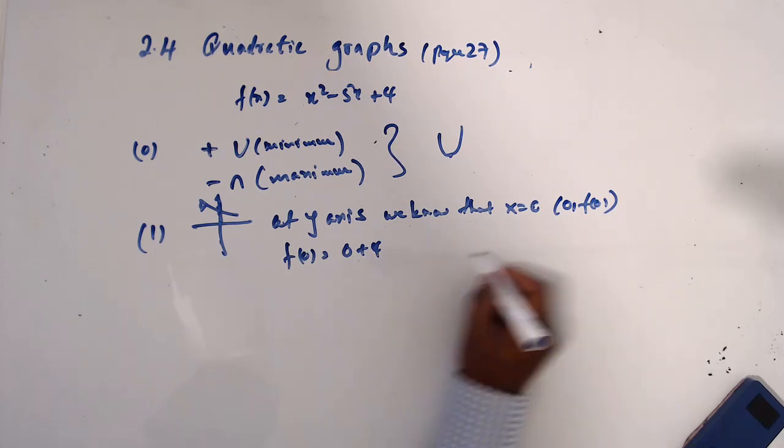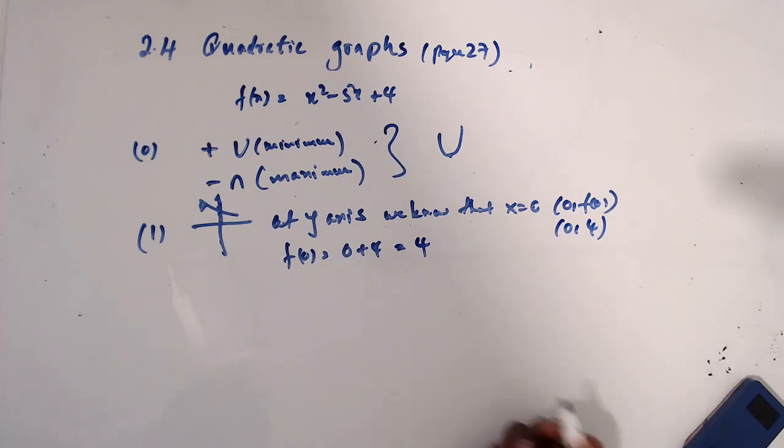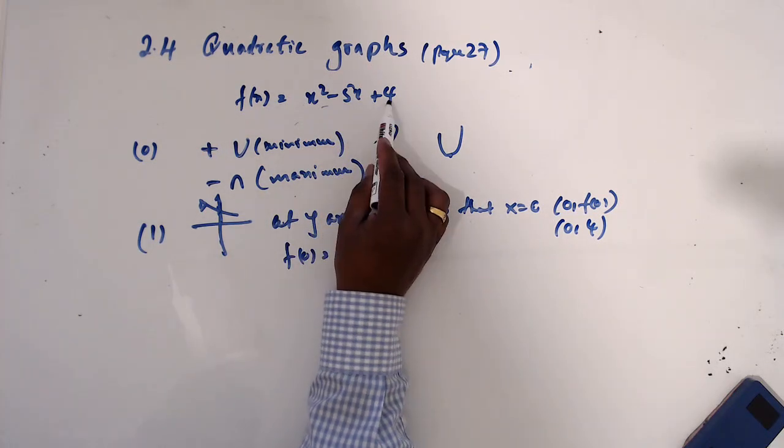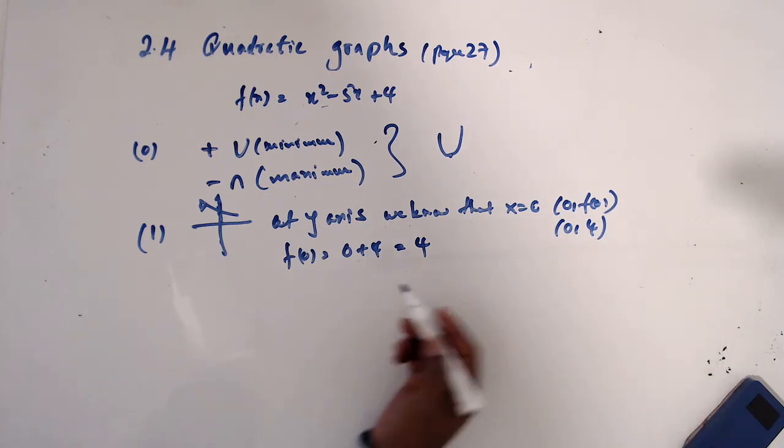So then f(0) is 4. Now this is 4. Simply you make this one 0. You can see 4, this is the intercept, the y-intercept.